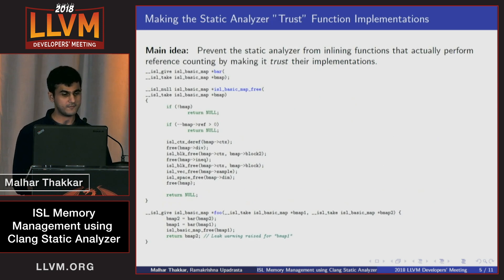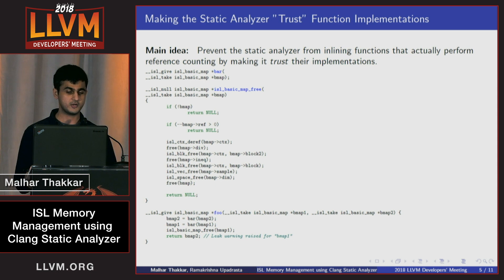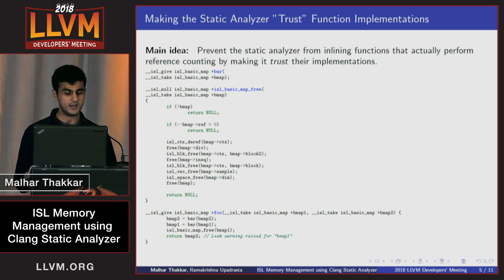Let's take a look at this example. If you look at the function foo, it has two objects, bmap2 and bmap1, which are returned by the function bar, which returns an ISL give pointer. So those are obtained with a reference count of plus one each.